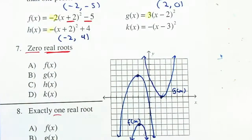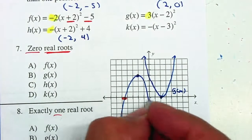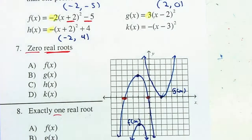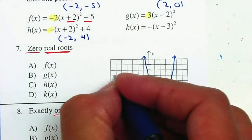Remember, we're just doing a quick sketch. How many times does it cross the x-axis? How many real roots does it have? 2. So this is h of x.